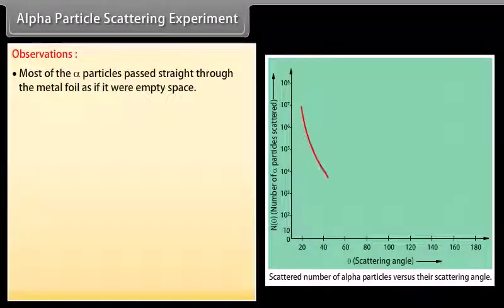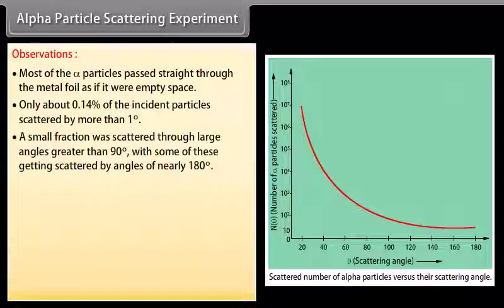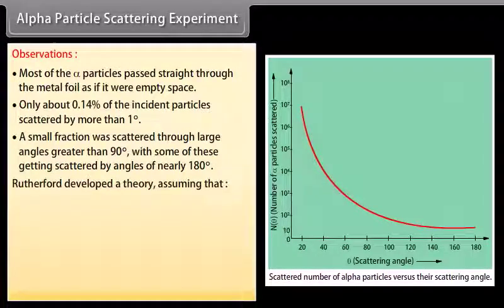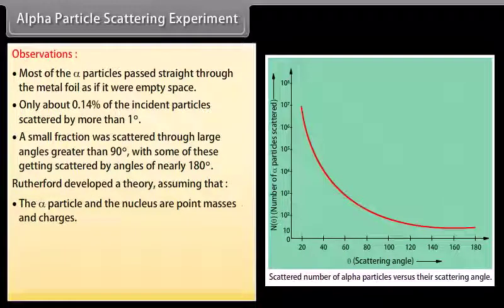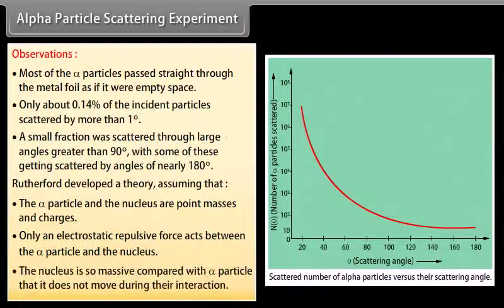Most of the alpha particles passed straight through the metal foil as if it were empty space. Only about 0.14% of the incident particles were scattered by more than 1 degree. Small fractions were scattered through large angles greater than 90 degrees, with some getting scattered by angles of nearly 180 degrees. Rutherford developed a theory assuming that the alpha particle and the nucleus are point masses and charges, and that only an electrostatic repulsive force acts between them. The nucleus is so massive compared with the alpha particle that it does not move during the interaction.